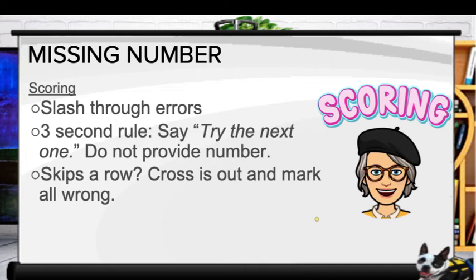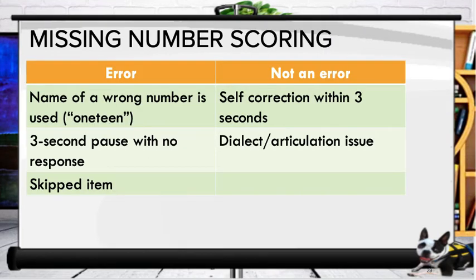When scoring, slash through errors as they're made and follow the three-second rule. If after three seconds the student hasn't responded, say 'try the next one' — do not provide the number. If the student skips a row, cross it out and mark the entire row wrong. Errors include naming a wrong number, a three-second pause with no response, or a skipped item. Self-correction within three seconds, or pronunciation, articulation, or dialect issues are not considered errors.